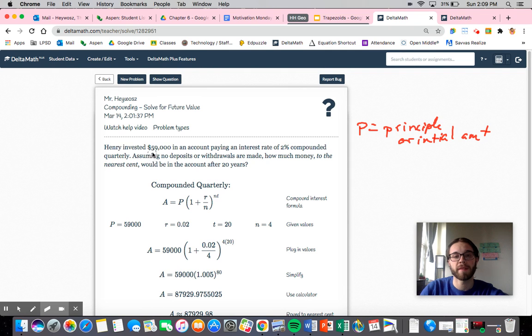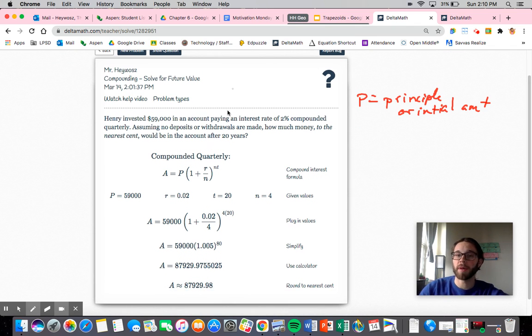We have that Henry is investing $59,000 in an account paying an interest rate of 2% compounded quarterly. When you see that will mean four times a year, so roughly every three months. Assuming no deposits or withdrawals are made, how much money to the nearest cent will be in the account after 20 years. So my number of years is always equal to t, so this is going to be my t. This right here is my r, equal to 2%, which is equal to 0.02. My principal is going to be $59,000, and it's compounded four times. So all we're going to do is we're going to plug it in.